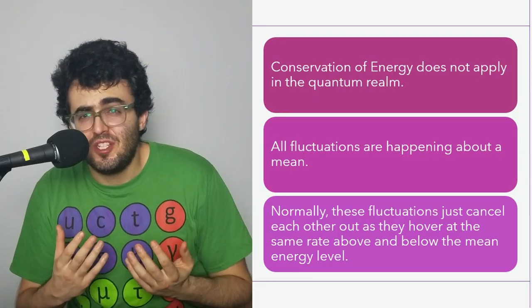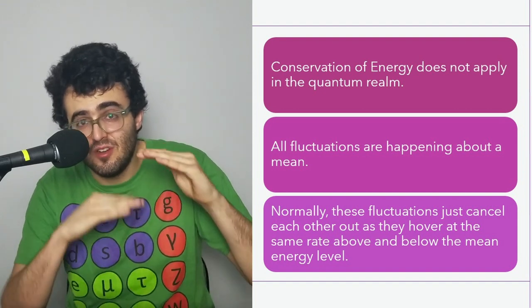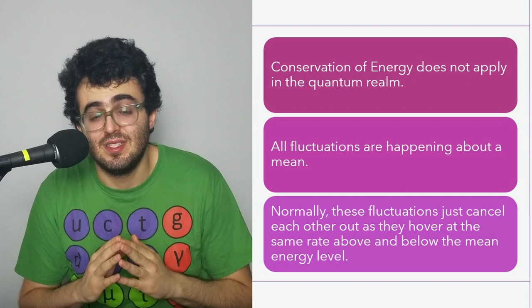But all of these fluctuations are happening around a base, around the mean amount of energy that it's going below or above in slight amounts.